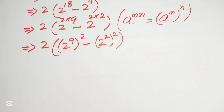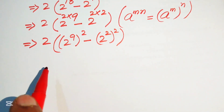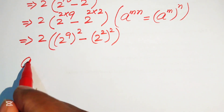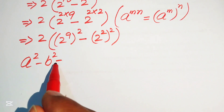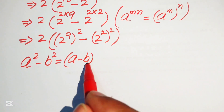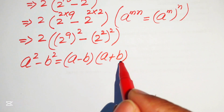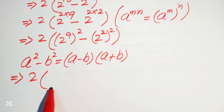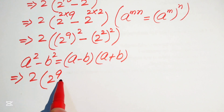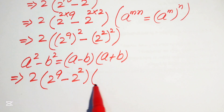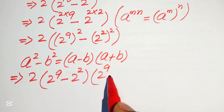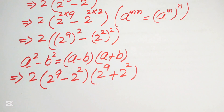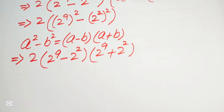After this step, we apply the algebraic formula: a squared minus b squared equals (a minus b)(a plus b). We apply this formula to the above term, so it is written as 2 times (2 to the power of 9 minus 2 squared) times (2 to the power of 9 plus 2 squared).